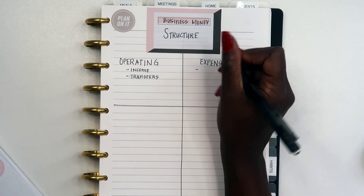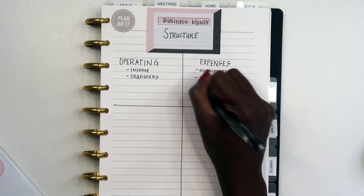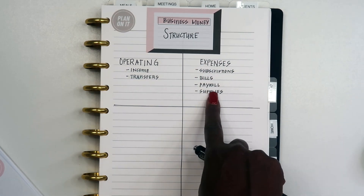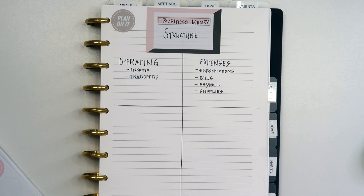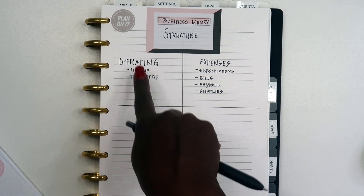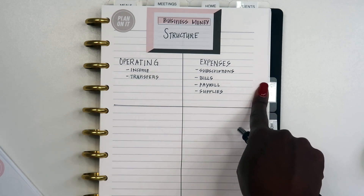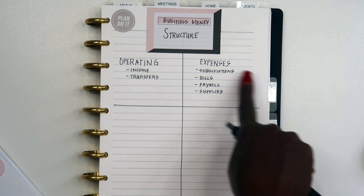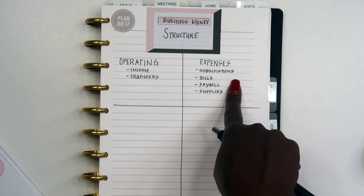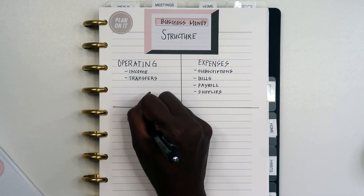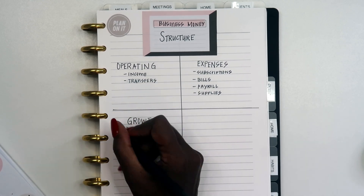The next account is also a checking account, and this is for payroll and expenses. Coming out of this account are all of our subscriptions, any bills we may have on a monthly basis, payroll, and any supplies or anything else we need to run the business. When income comes in to our operating account, I look at the expenses coming up for the next week or month and transfer over whatever money we need into our expense account.